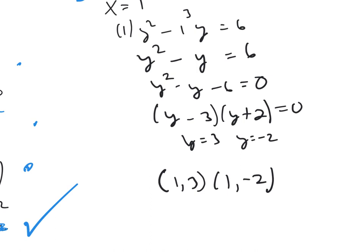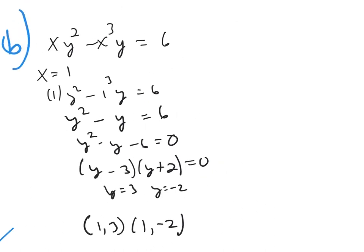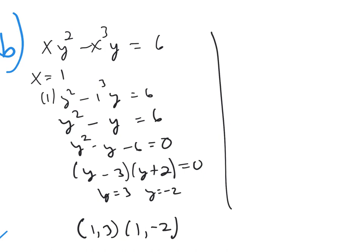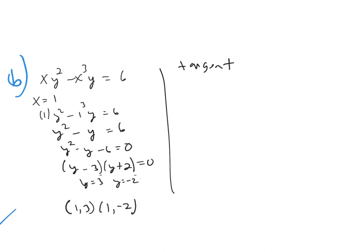You probably get one point for doing that — that wasn't even calculus, that's just algebra. But now, knowing the idea of a tangent line, we've got to finish this up. For my tangent lines, you need three things: your X1 — which is 1 for both points — your Y1 which is different for each point (3 or negative 2), and the third thing you need is slope.